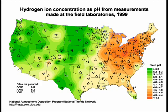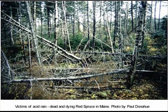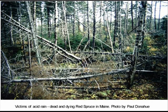This map shows pH values for precipitation throughout the United States. Precipitation is most acidic in parts of the Northeast and Midwest, generally downwind and roughly east of areas of heavy industrial development. A good example is that much of the pollution from Pennsylvania, Ohio, and Illinois falls out over New York.